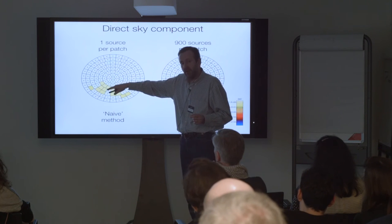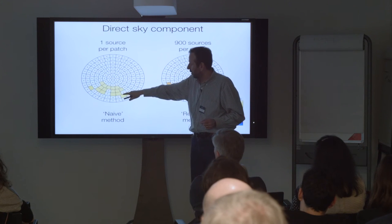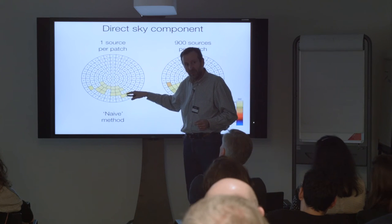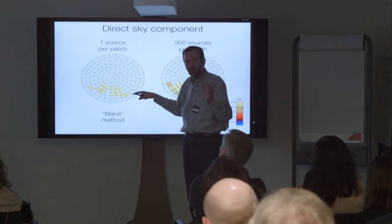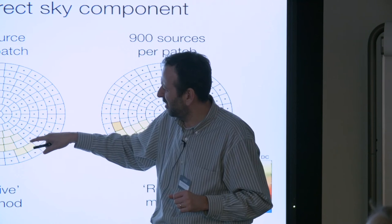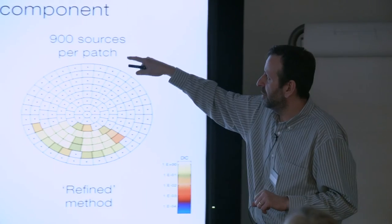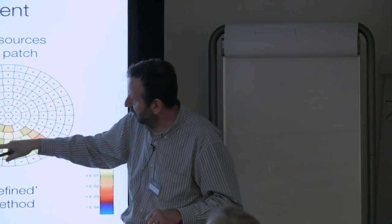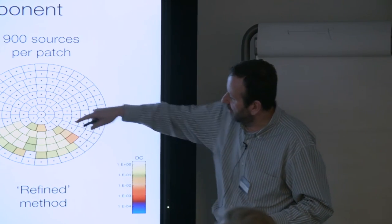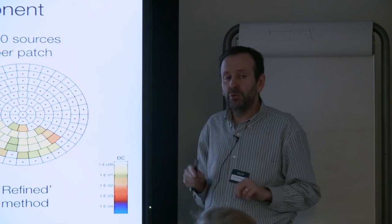We can compare the results there. So if we now just got the naive method without interreflection, we're just getting the direct light source one source per patch. All those values are identical because you either see it or you don't. When you see it it assumes complete visibility for that one. You have slight variation with the difference in solid angle but very slight. Whereas with 900 sources per patch we're accurately sampling each patch for partial visibility and that's what we see and we can see our projection or hemispherical projection of the windows.